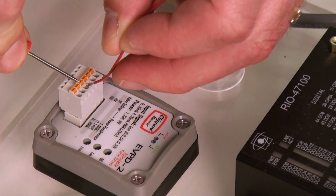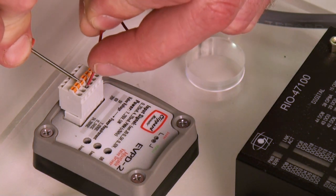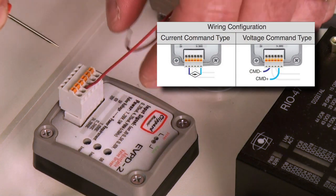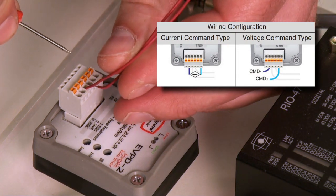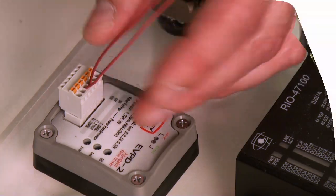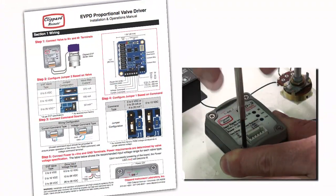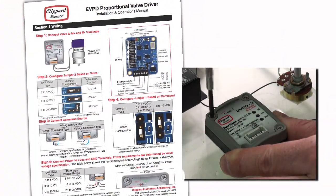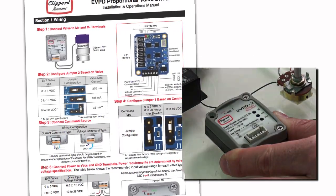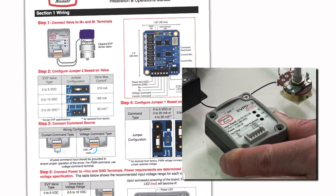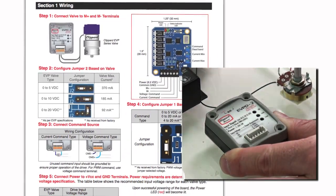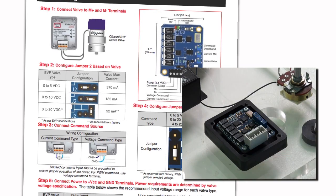So let's connect that valve up to the driver first. There's a wiring diagram on the TDS online. Now that we have the valve connected, let's make sure that the output current jumper is set properly for the valve you have connected. The factory setting for the jumper is 92 milliamp output for 0 to 20 volt valves. If you are using a different coil, change the jumper accordingly.